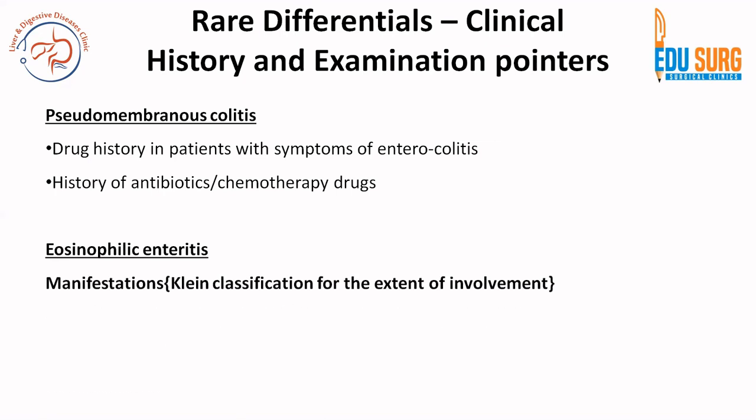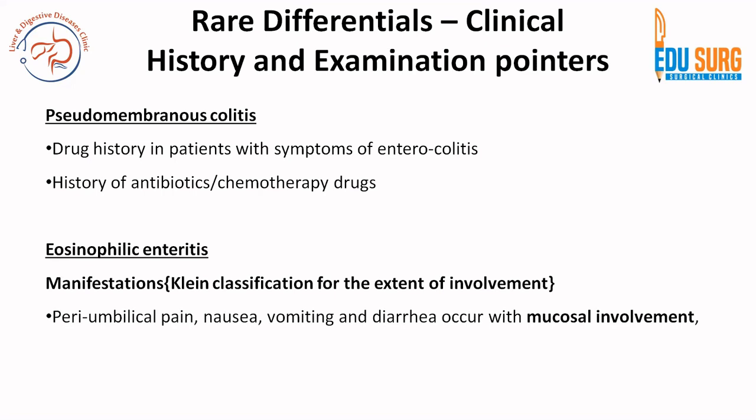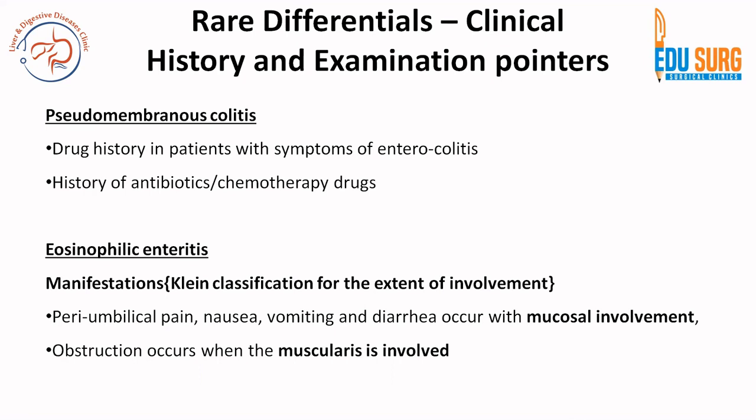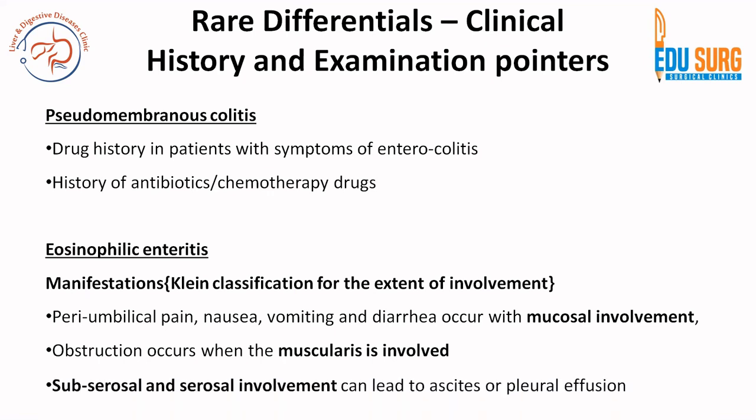Eosinophilic enteritis: there is something known as the Klein classification for the extent of involvement. Manifestations can be periumbilical pain, nausea, vomiting and diarrhea with mucosal involvement. Stenosis and obstruction can occur once the muscularis is involved. The Klein classification is a commonly asked MCQ: mucosal involvement leads to nausea, vomiting, diarrhea and pain; muscularis involvement leads to stenosis, stricture and obstruction; and subserosal or serosal involvement can lead to ascites or pleural effusion.